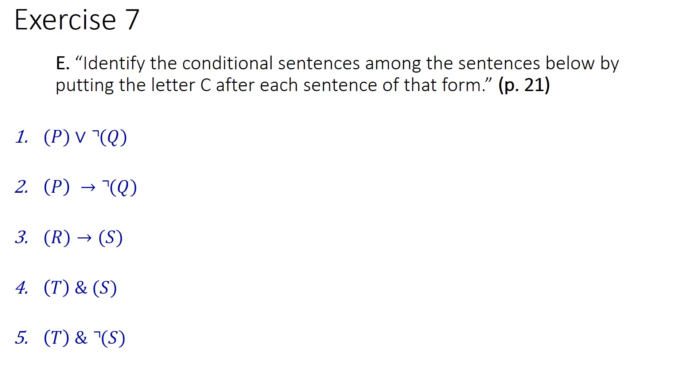Okay, one more problem set. This is part E of exercise 7 on page 21, we're to identify the conditional sentences among the sentences below by putting the letter C after each sentence of that form. The symbol for this sentential connective is the arrow, hence clearly sentences 2 and 3 are conditionals.